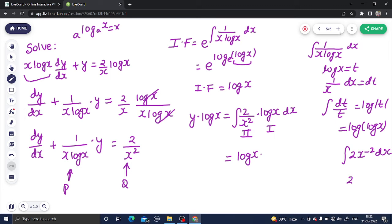2 x power minus 2 plus 1 is minus 1, divided by same power. So minus 2 by x is what you are getting. Derivative of log x, integration of 2 by x square. Now this is coming out to be minus 2 by x log x.